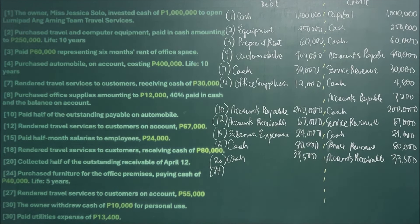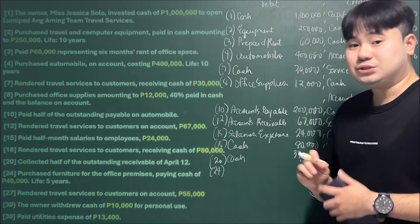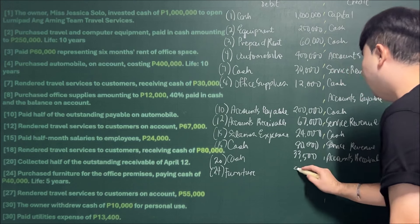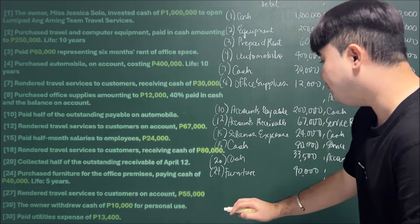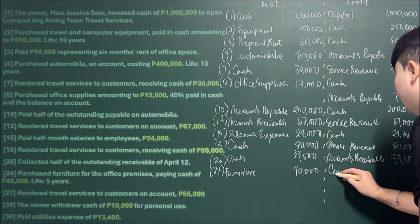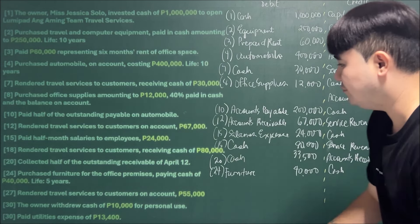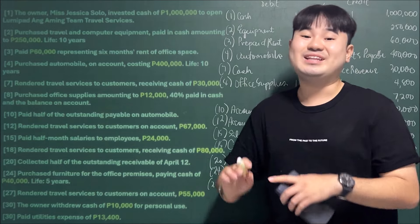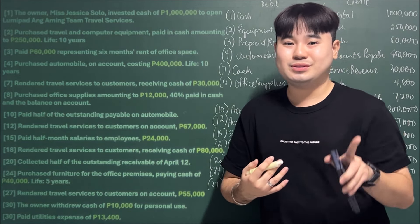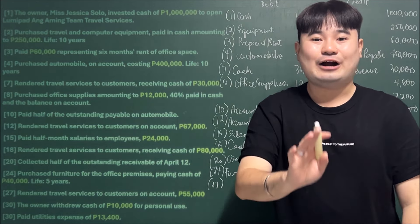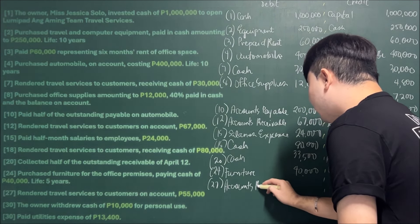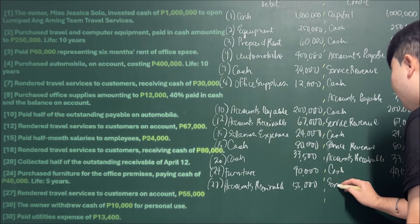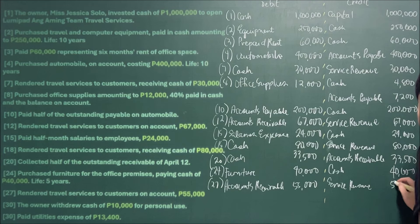April 24: Purchased furniture for the office premises, paying cash of 40,000. We debit Furniture for 40,000 and credit Cash for 40,000. April 27: Rendered travel services to customers on account for 55,000. We debit Accounts Receivable for 55,000 and credit Service Revenue for 55,000.